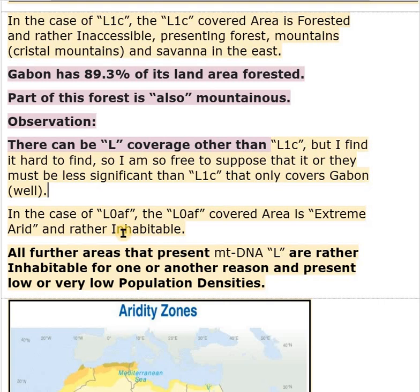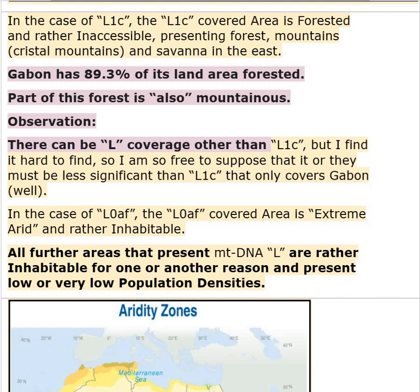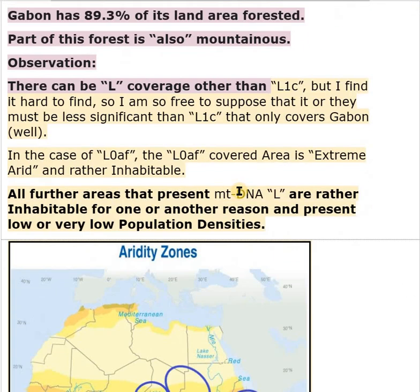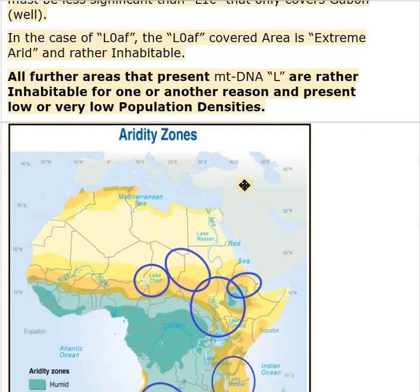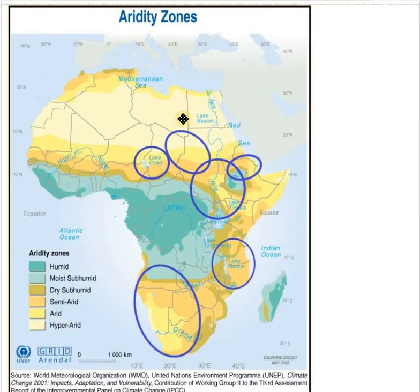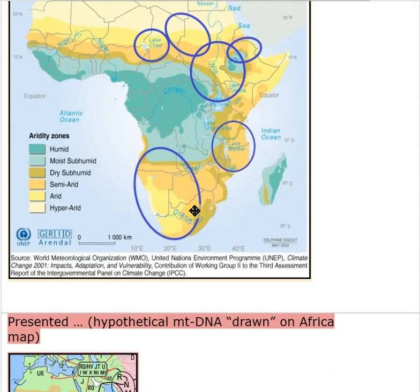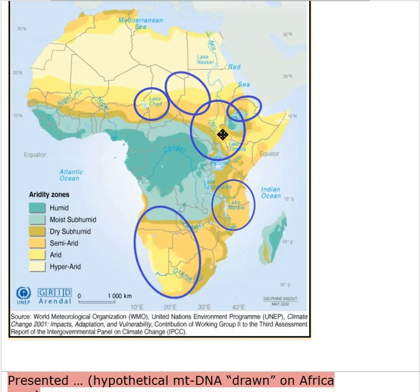In the case of L0af, the area covered by it is extremely arid and rather uninhabitable. All areas that present mtDNA L are rather uninhabitable for one reason or another — very arid, or extremely forested, or mountainous — presenting low or very low population densities. These are the aridity zones of Africa, and they coincide with haplogroup A, which is Homo sapiens.